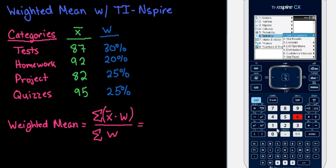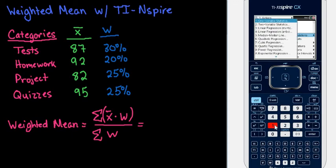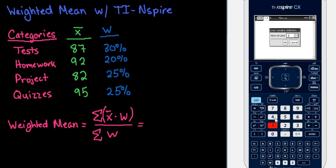And for this one, I'm going to do stat calculations, which is option 1. So that was menu, statistics, which was option 6, and option 1, stat calculations. And I'm going to choose the first one, 1var stats, or 1-variable statistics.